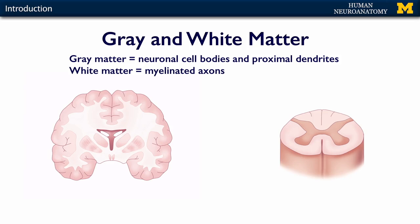Grey matter and white matter are two terms that describe the gross anatomical appearance of the central nervous system when it's sectioned. In the brain, we have grey matter on the outside — it's a little bit darker — and it's made up of neuronal cell bodies and their proximal dendrites. Deep to the grey matter is the white matter, made up of myelinated axons; it appears white because myelin is highly enriched in lipids, which look white in a fresh specimen. In the spinal cord, we have just the opposite: white matter on the outside and grey matter on the inside — neurons and proximal dendrites hidden in that grey butterfly shape, with white matter fiber tracts all around the outside.